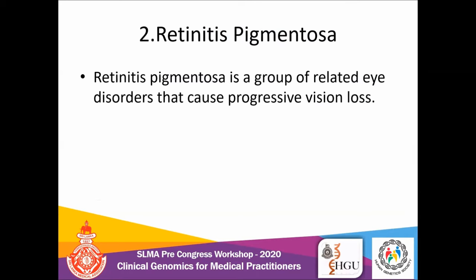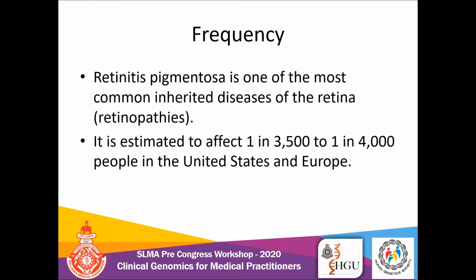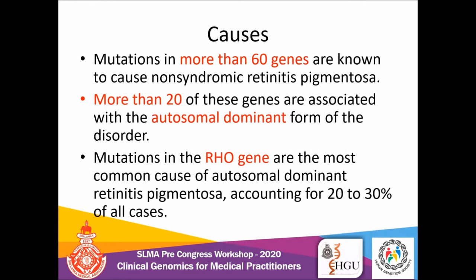The second condition I'd like to discuss is retinitis pigmentosa. It is a progressive vision loss condition and one of the most common inherited genetic disorders affecting the retina. Its frequency is 1 in 3,500 in the United States and 1 in 4,000 in Europe. There are nearly 60 genes responsible for non-syndromic retinitis pigmentosa, since retinitis pigmentosa can also be associated with other systemic disorders. I am talking about pure, simple, inherited retinitis pigmentosa.